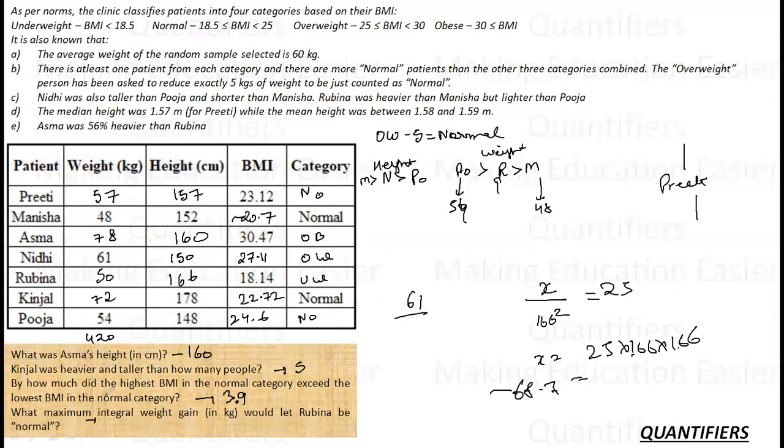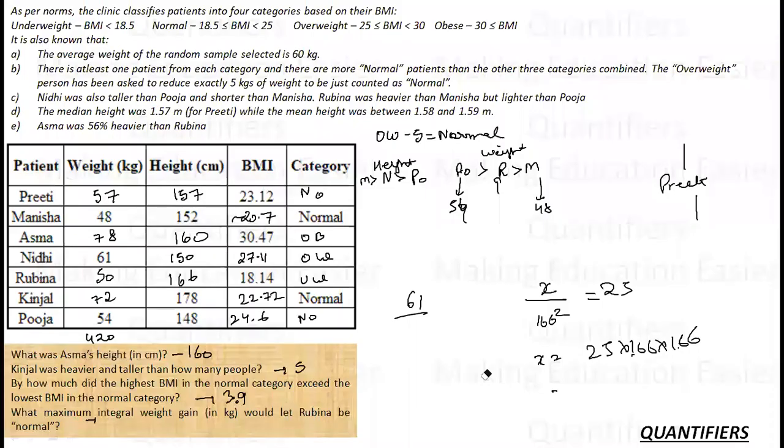So she has to be less than 68.7 in order to remain normal. So the weight she can actually gain is 68 minus 50, that is 18 kgs. So she can actually gain 18 kgs and still be normal.